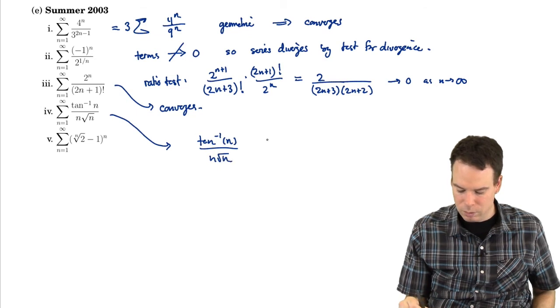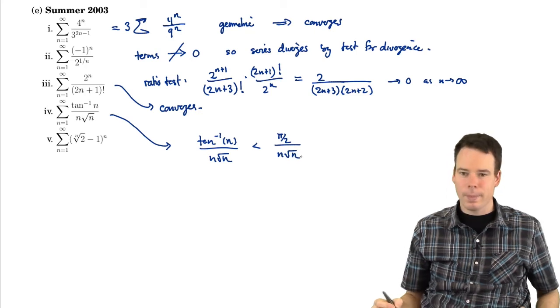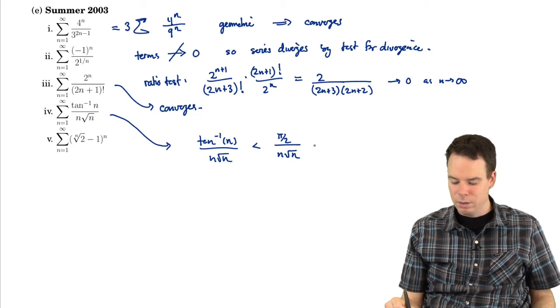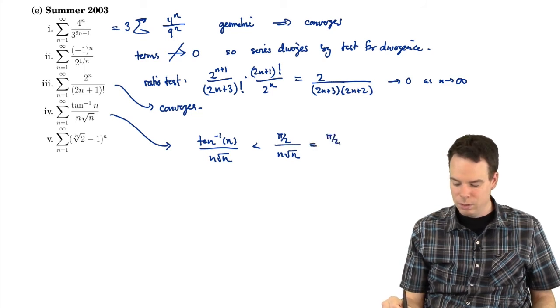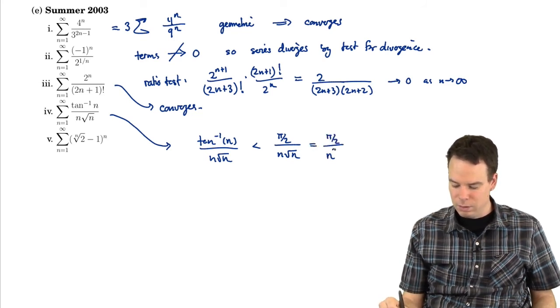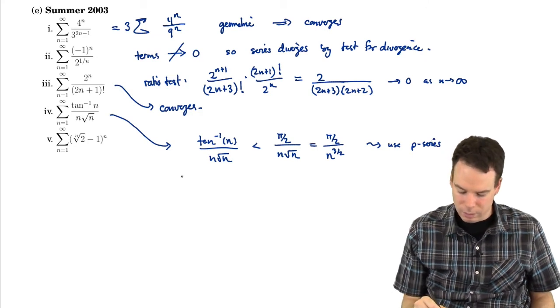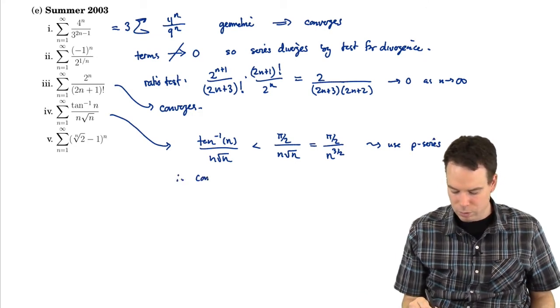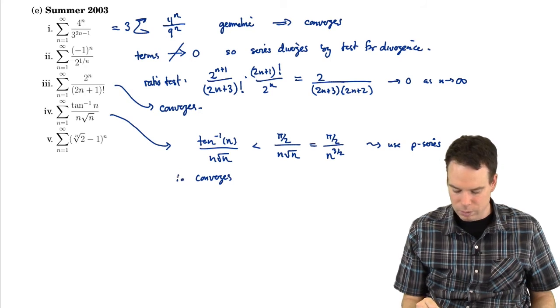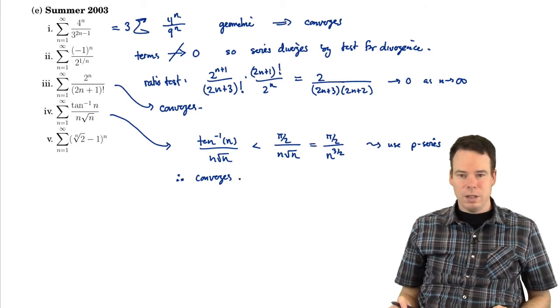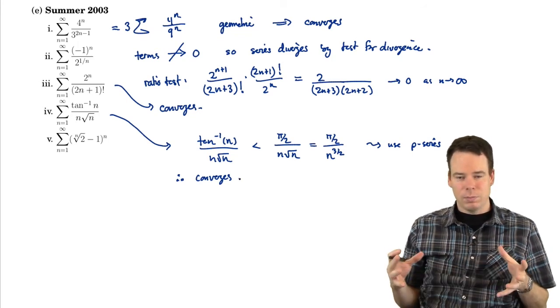So here, I would probably do something like arctan of n over n root n, and that's smaller than pi by 2 over n root n. Now is that helping me? Sure, because now my terms are smaller than these things, which is essentially the terms of a p-series, n to the 3 halves. So now I would use p-series, results from p-series, and get that it converges. So therefore, that's what this triangle of dots means, it therefore converges. Again, I'm being really brief here, but you can fill in the details. I'm just giving you the higher level perspective.